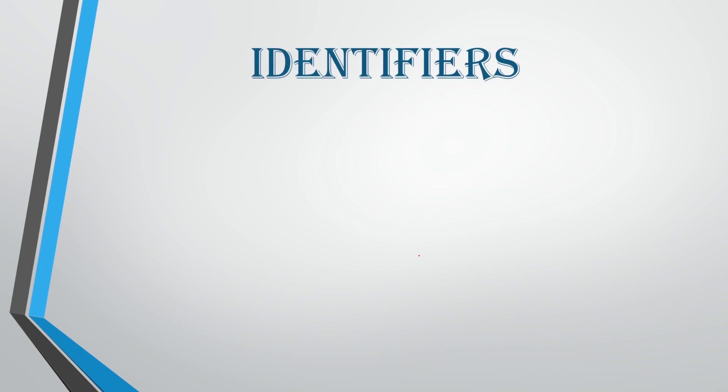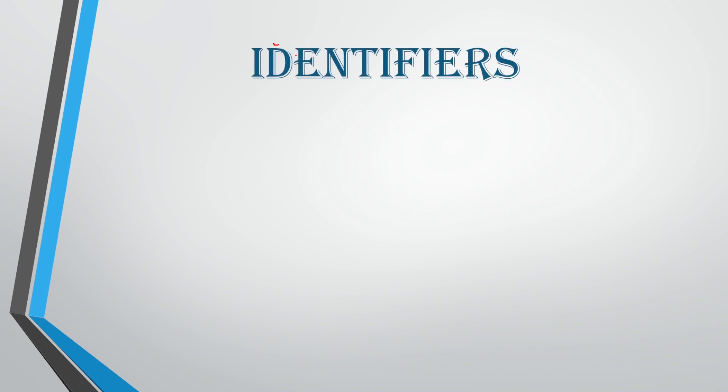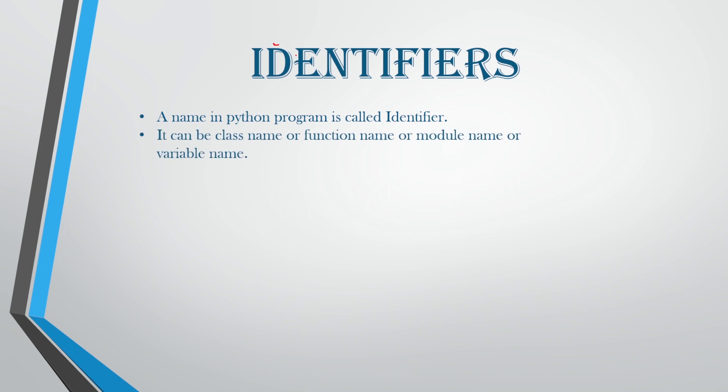Next, we are going to see about identifiers in Python. What are identifiers? A name in Python is called an identifier. If you are going to simply give a name for a variable, then that will be known as an identifier. It can be a class name, a function name, a module name, or any other variable name — that will be known as an identifier in Python.